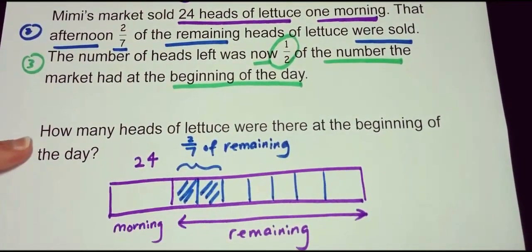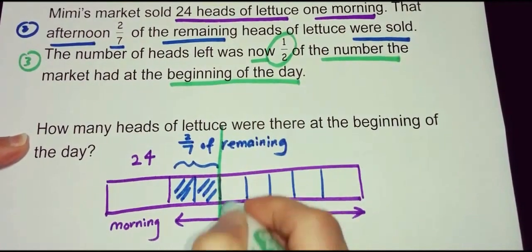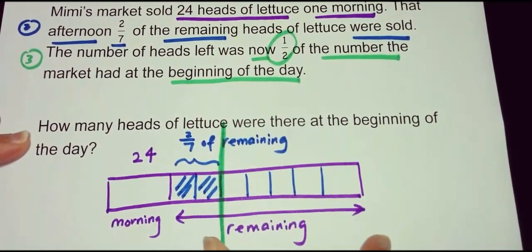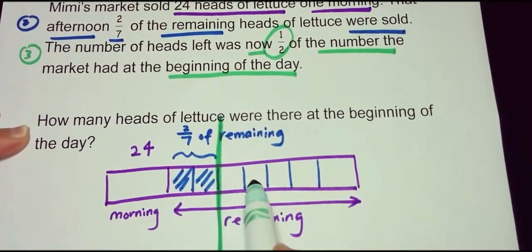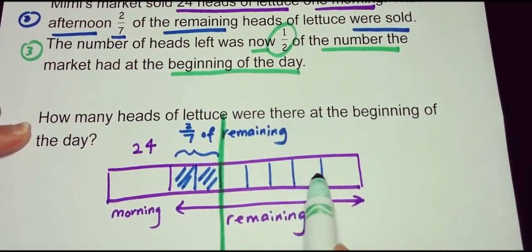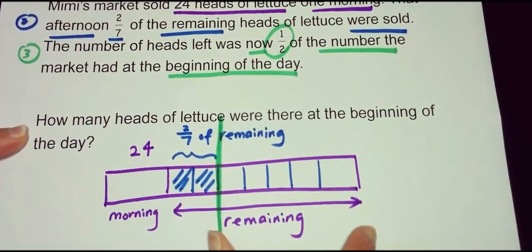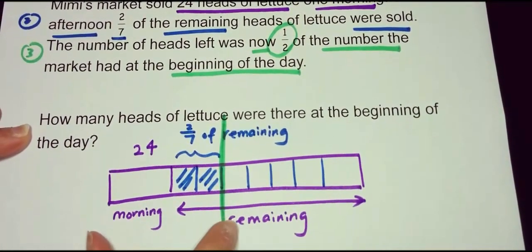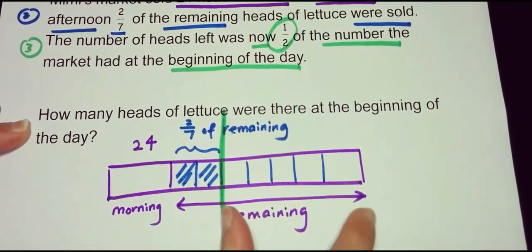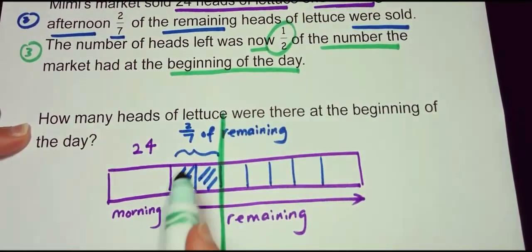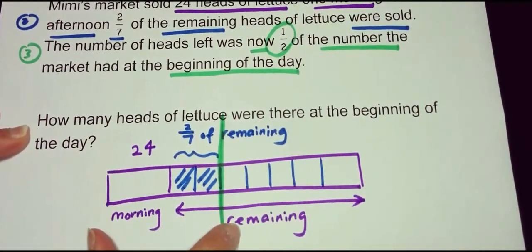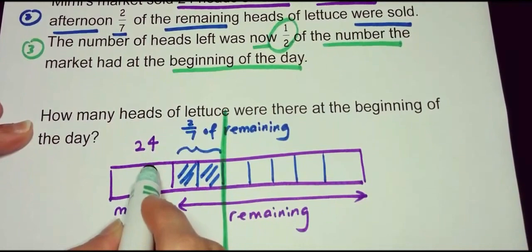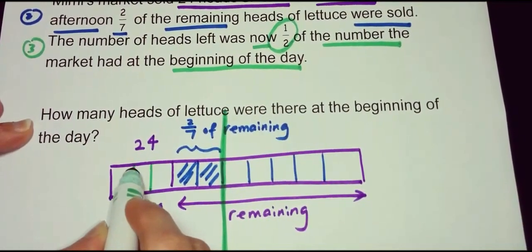So what do we have now? What is left is five parts — one, two, three, four, five. If five parts are left now, there must be five parts in the beginning, since it is now half. We have five parts here, and there are two here already, so this must be three.